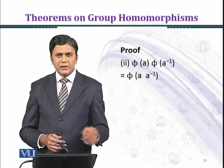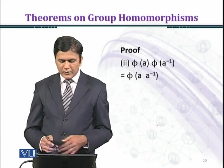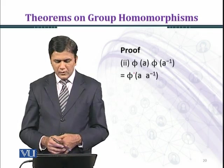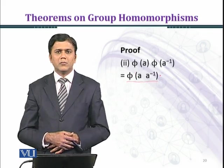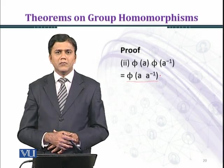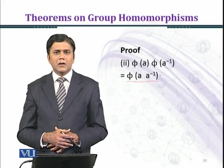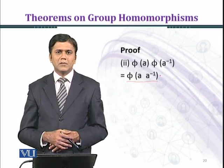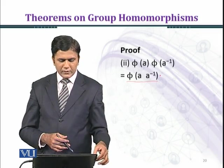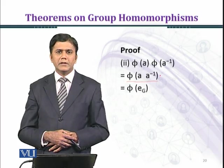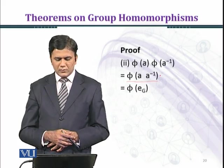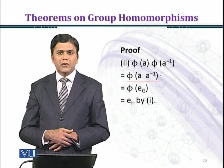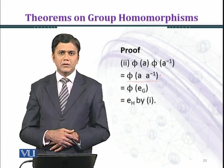Now we prove the second property. We compute phi(A) times phi(A inverse). Using the homomorphism property, we shall obtain phi of A times A inverse. Here A and A inverse both belong to group G. By the inverse law, A times A inverse gives the identity element E_G. So we obtain this equals phi(E_G), and by property 1, phi(E_G) maps to E_H under phi.